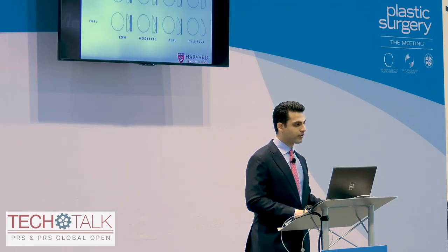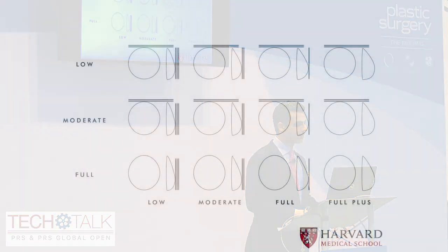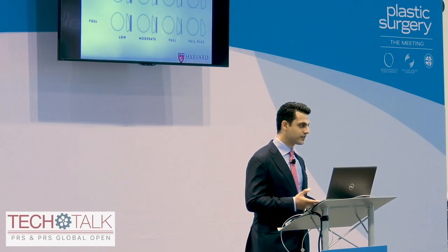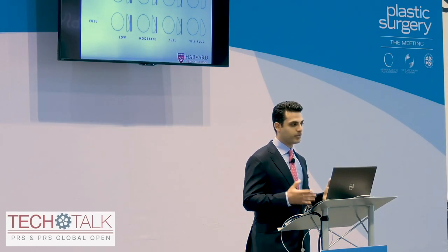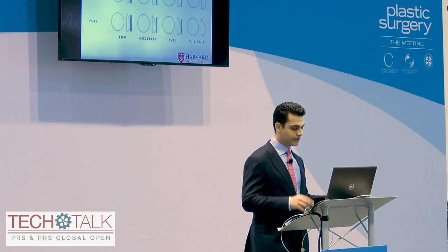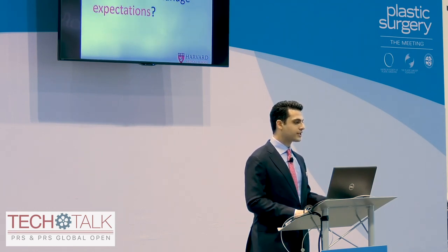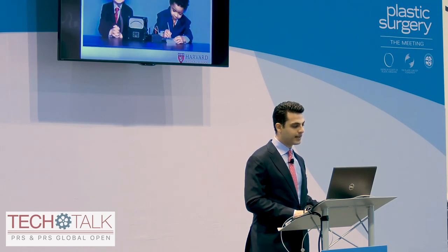Same thing with breasts — in breast augmentation, a C cup is viewed very differently in Dallas, Texas than in Boston, Massachusetts. So it's critically important to know exactly where that patient stands so you don't make an error. How do we manage expectations and improve our patient selection using technology?